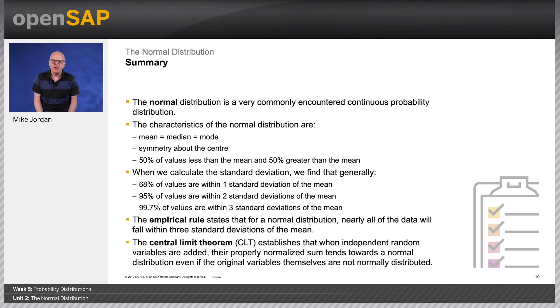In summary, the normal distribution is a very commonly encountered continuous probability distribution. The characteristics of the normal distribution are: mean equals median equals mode, symmetry about the center, 50% of values less than the mean and 50% greater than the mean. When we calculate the standard deviation, we find that generally 68% of values are within one standard deviation, 95% of values are within two standard deviations of the mean, and finally, 99.7% of the values are within three standard deviations of the mean.